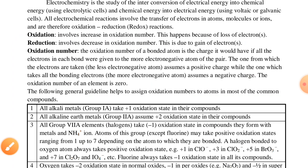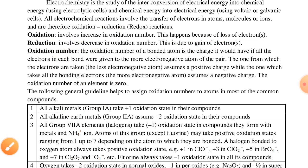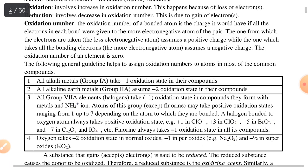The oxidation number of an element in its pure form is zero. The following general guidelines help us assign oxidation numbers to atoms in most common compounds.